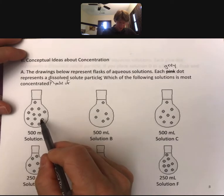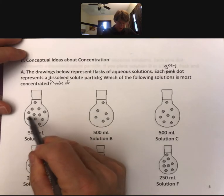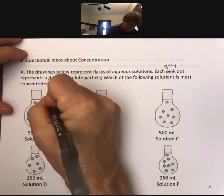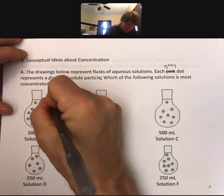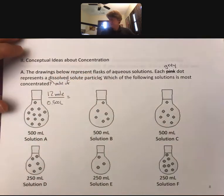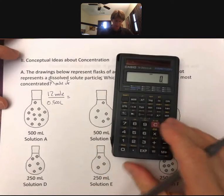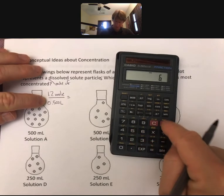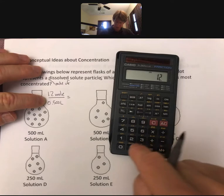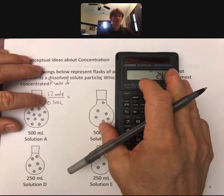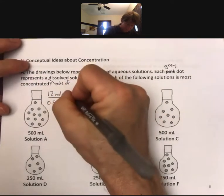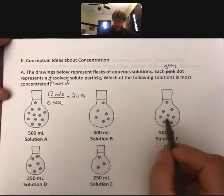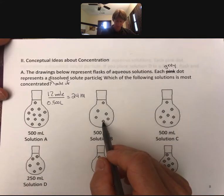We might say 1, 2, 3, 4, 5, 6, 7, 8, 9, 10, 11, 12 - so that's 12 moles per 500 milliliters or 0.500 liters. Just getting an idea here: 12 divided by 0.5. In this picture we might think of this as 24 molarity. That's going to be more concentrated than these other ones because these ones have smaller numbers of dots.